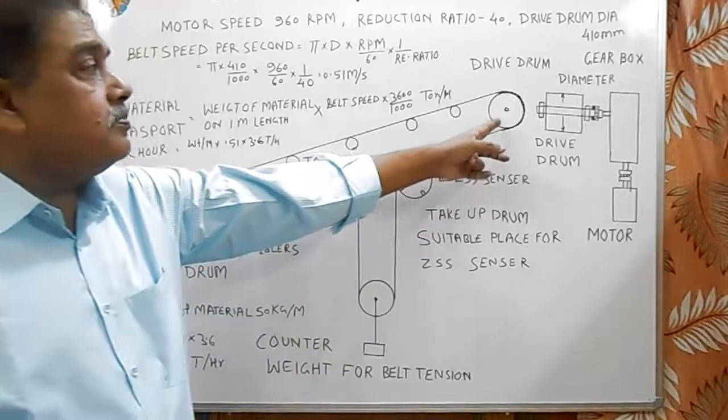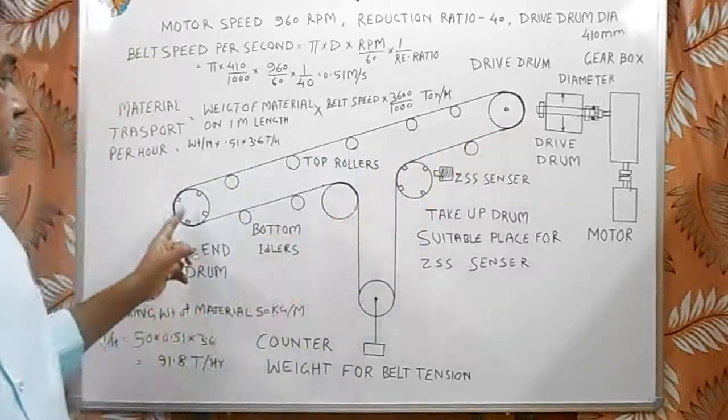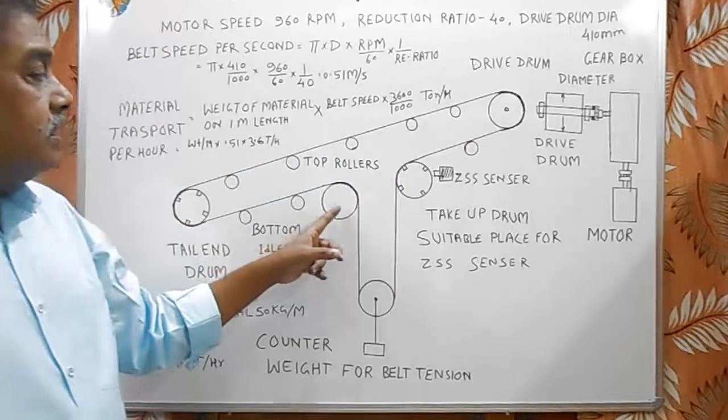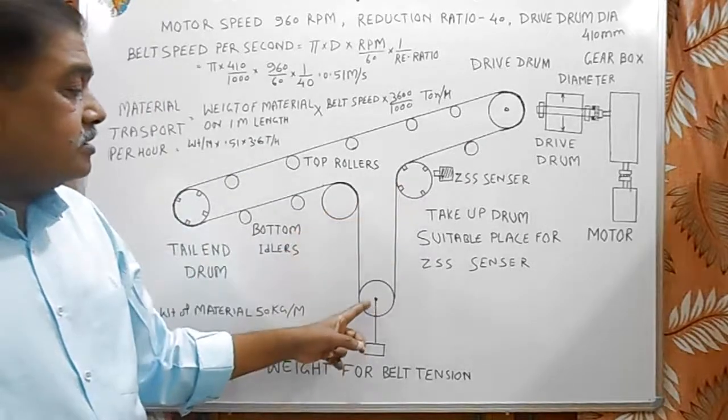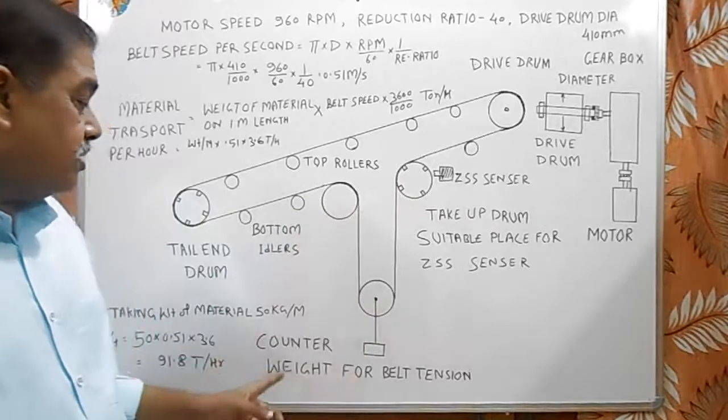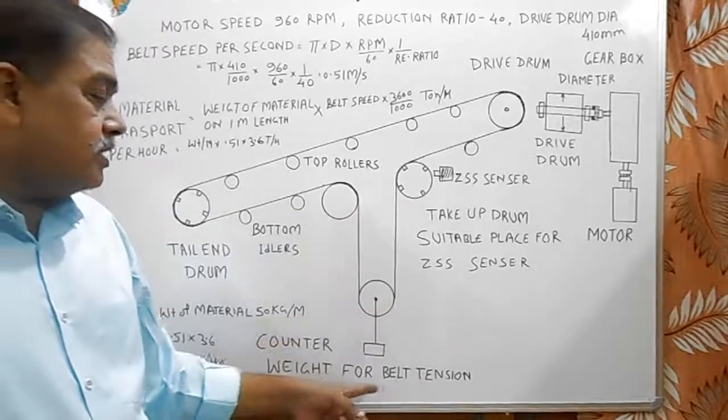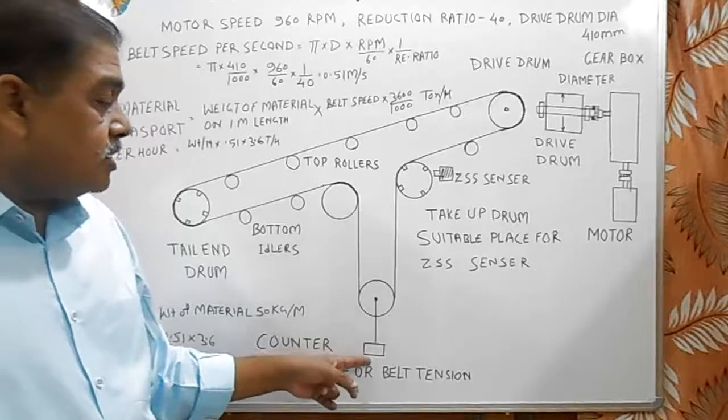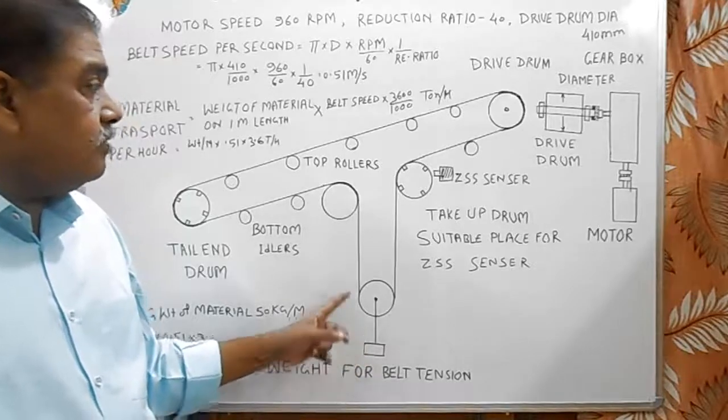First one is the drive drum. Second one is the tailend drum. And these are take-up pulleys and this is gravity pulley tension drum or counterweight. This counterweight gives tension to the whole belt.